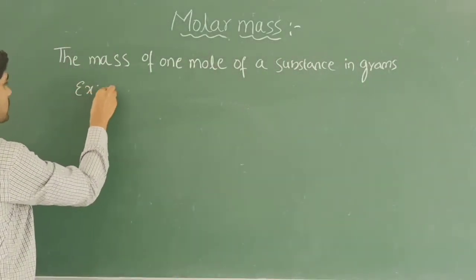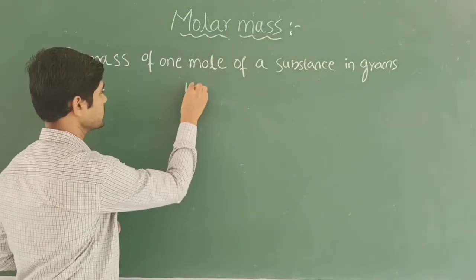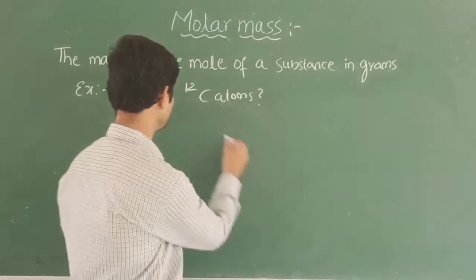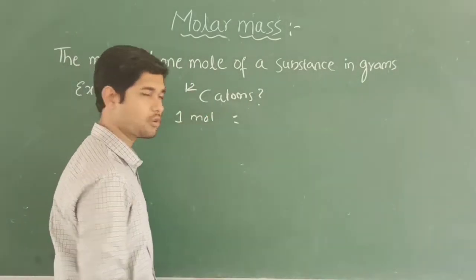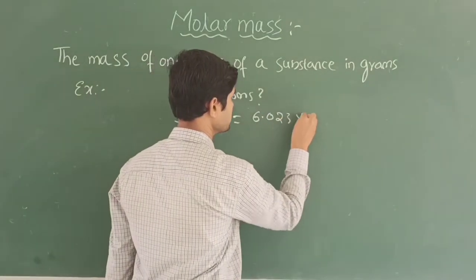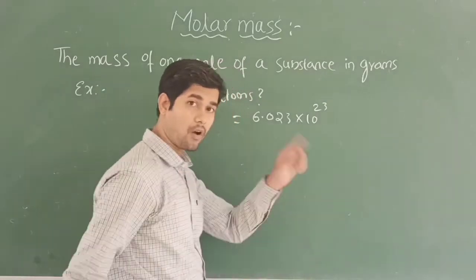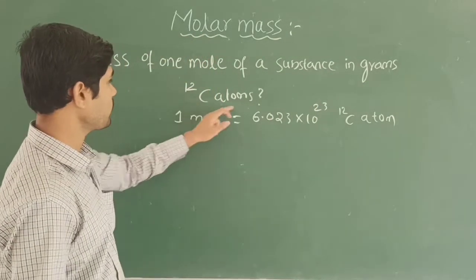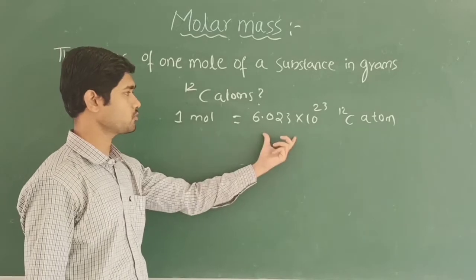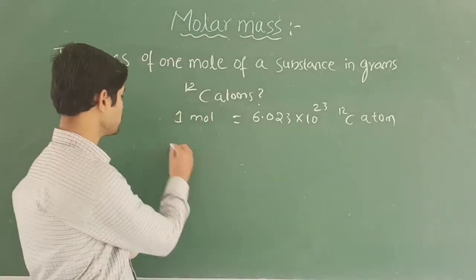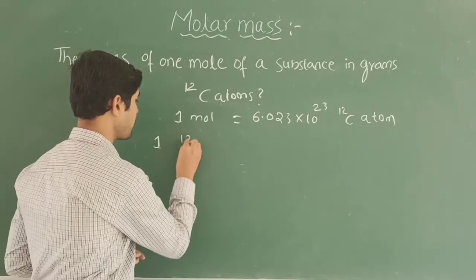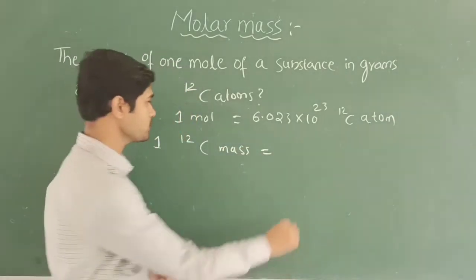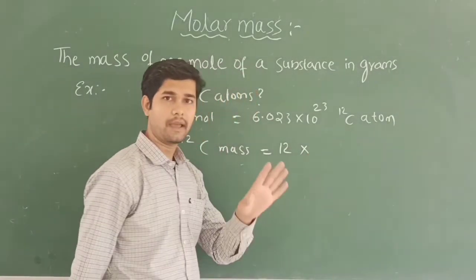What is the molar mass of the carbon-12 atoms? We know that one mole is equal to 6.023 × 10²³ carbon-12 atoms. To find out the molar mass of carbon-12 atoms, we know that one mole is equal to 6.023 × 10²³ carbon-12 atoms, and one atom of carbon-12 has a mass of 12 amu.